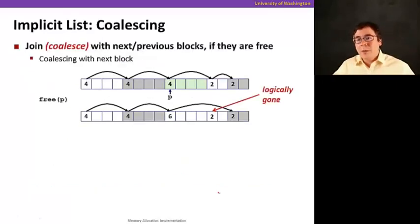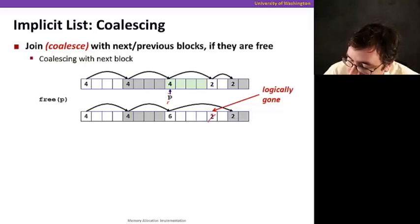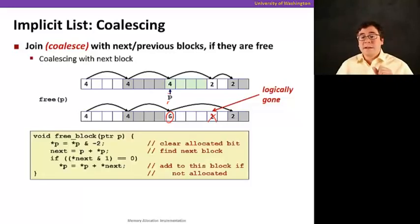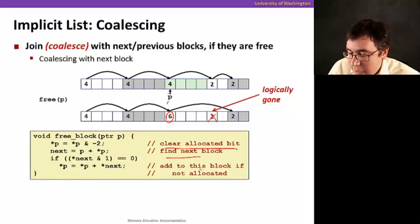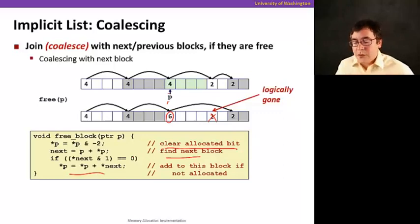So, naturally, what are we going to do? Well, we're going to coalesce these free blocks into a larger one. So, now, for example, if we have this pointer P here to this block four, when I free it, what I want to do is to make this logically gone and free it and make the size of the new free block be six. How are we going to do that? Well, we're going to clear out the allocated bit, find the next block, and if it happens to be free, we're just going to adjust the size. That's all. Pretty cool, right? So, we just add the sizes if they're free, and again, since the allocated bit is free, you can just do this addition without masking out the bits.